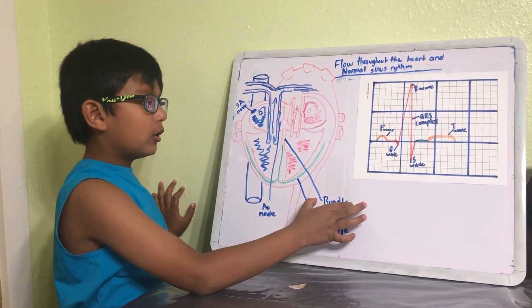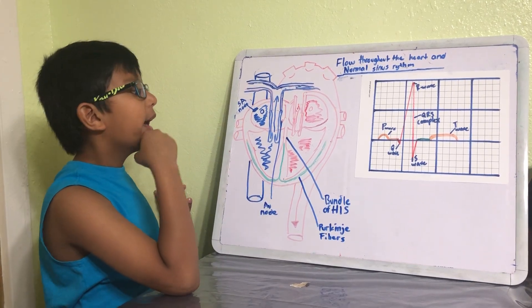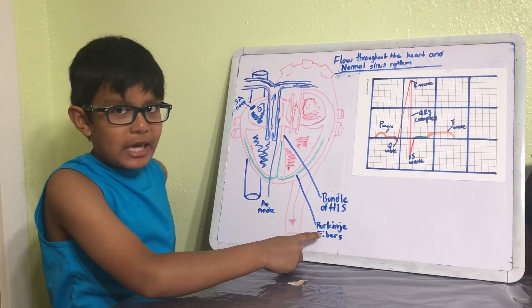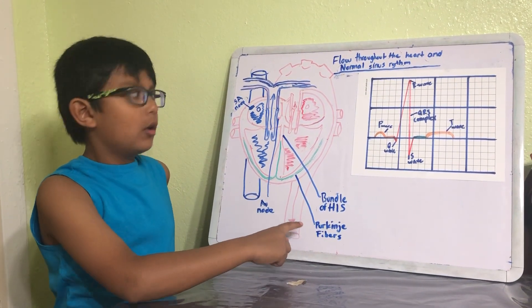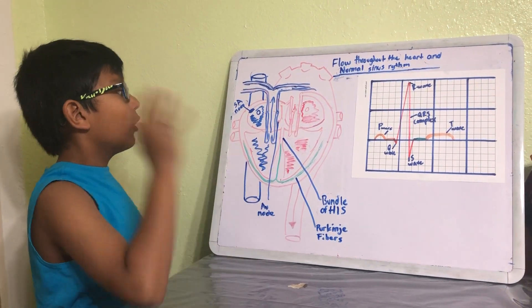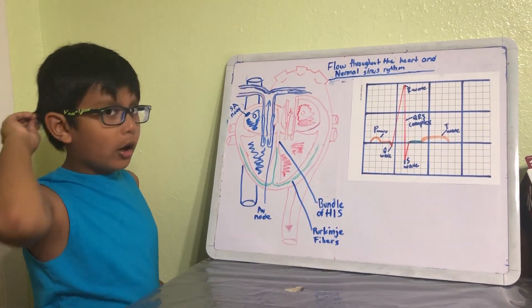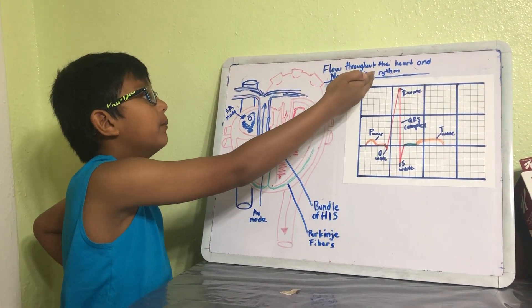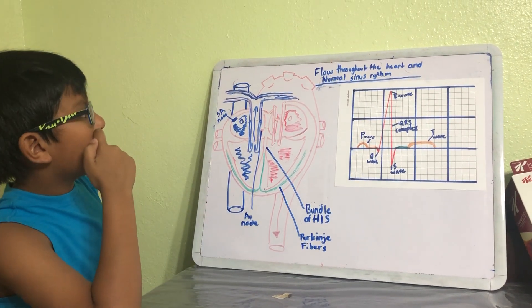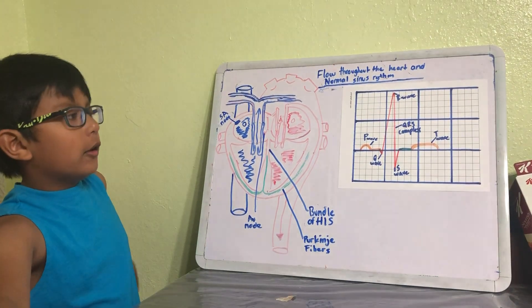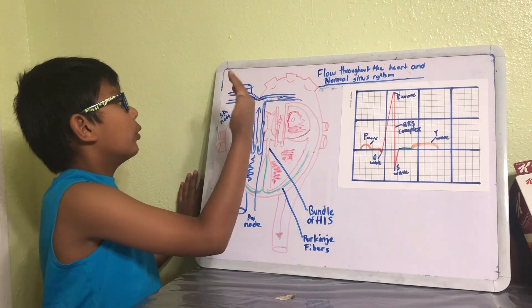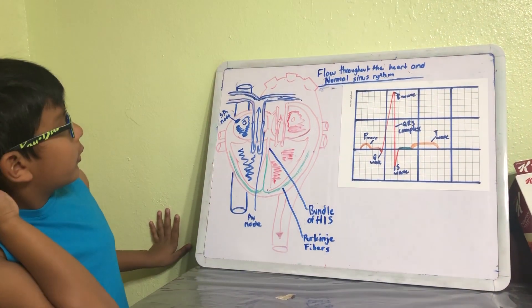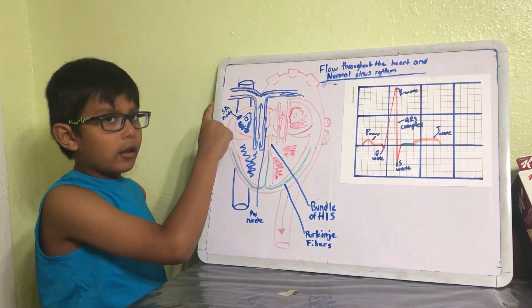And then right here, this green part that you see, this is the Purkinje fibers. So all of these items are engaged in a system called normal sinus rhythm. Basically, the vector of flow goes from here to here. We start at the SA node.